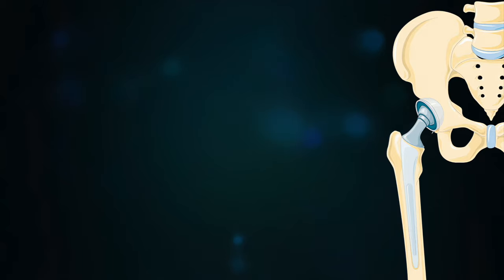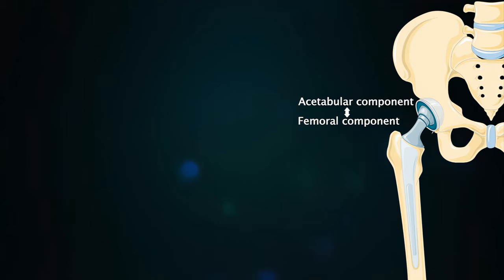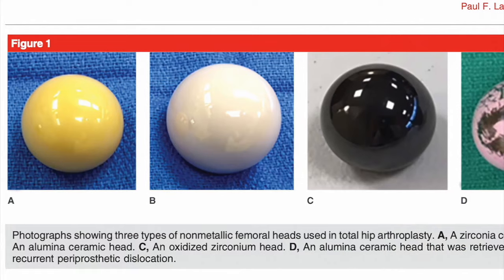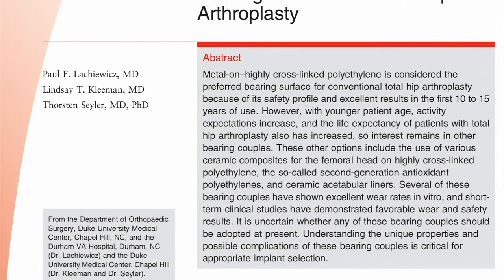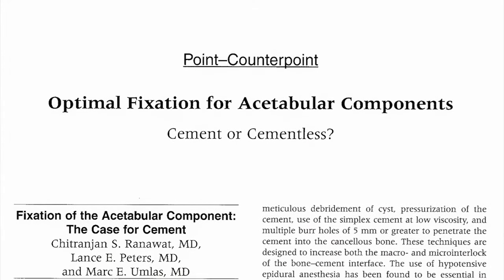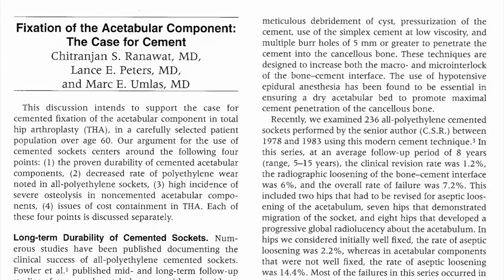Total hip prostheses consist of a femoral component, an acetabular component, and a bearing surface. This modularity gives the operating surgeon tremendous flexibility in dealing with any intraoperative situation or anatomical variation. The more common approach in the United States achieves fixation without the use of cement and relies on bony in-growth into or onto the porous implant surface that has been press-fit or interference-fit into the surrounding bone. The alternative — an acetabular component fixed with cement — has fallen out of favour in the United States due to studies showing a higher overall loosening rate, though some surgeons advocate its use for older patients with poor bone quality.